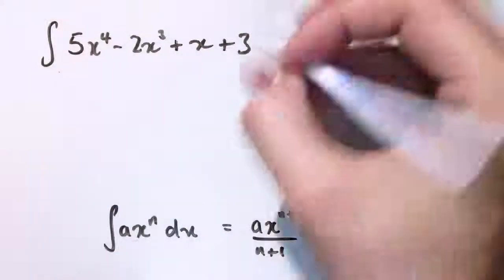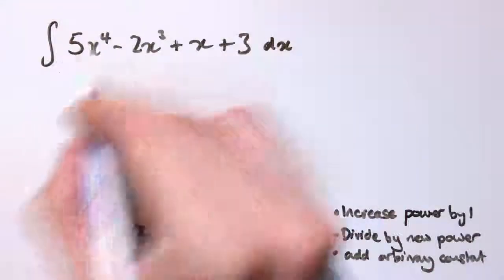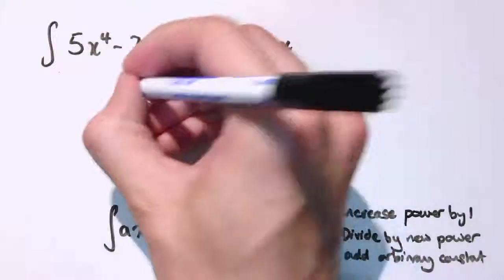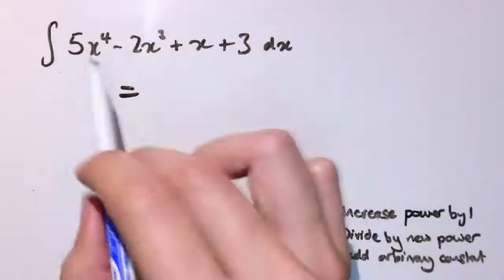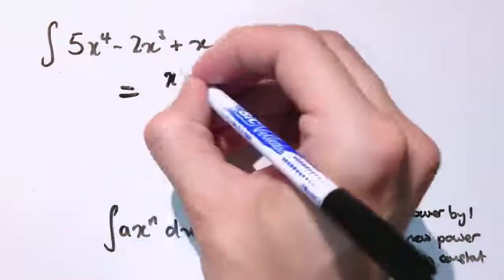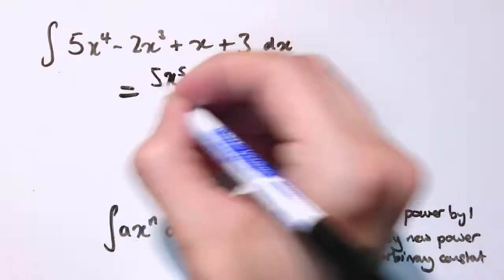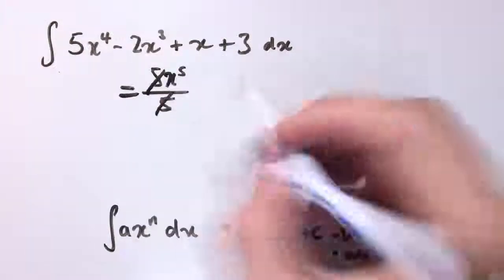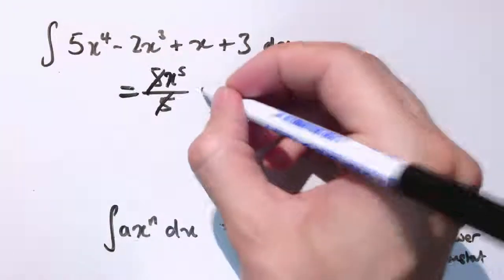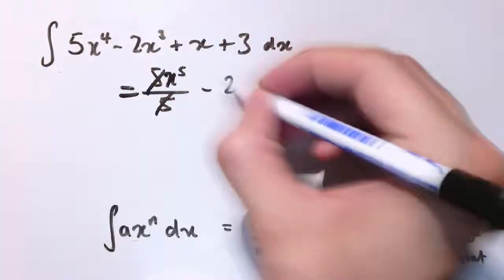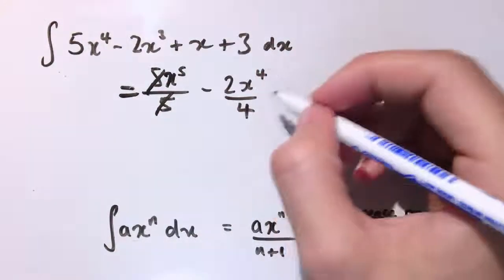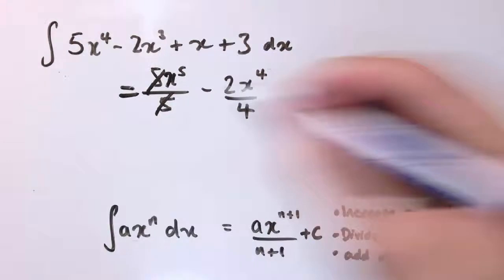Here's another one then. I want to integrate 5x to the 4 minus 2x cubed plus x plus 3 with respect to x. So increase the power by 1, that becomes x to the 5. Still got my 5, divide by the new power of 5, so the 5s cancel and we're just left with x to the 5. Here we get minus 2, increase the power by 1 to 4, divide by the new power. And again there's a bit of cancellation here.